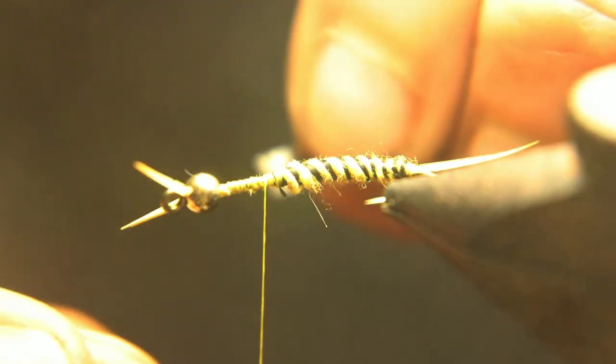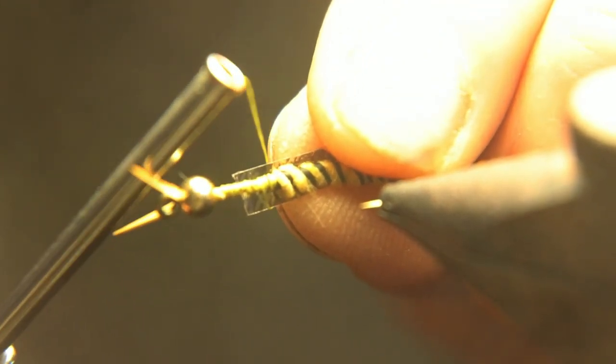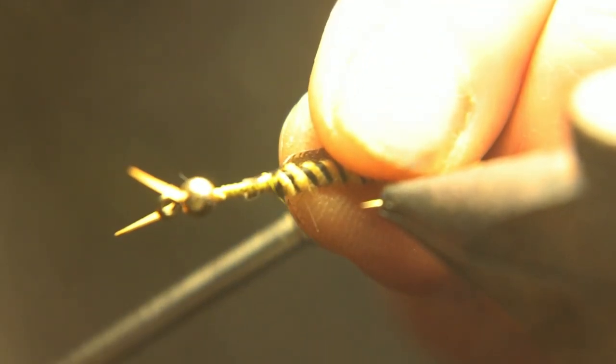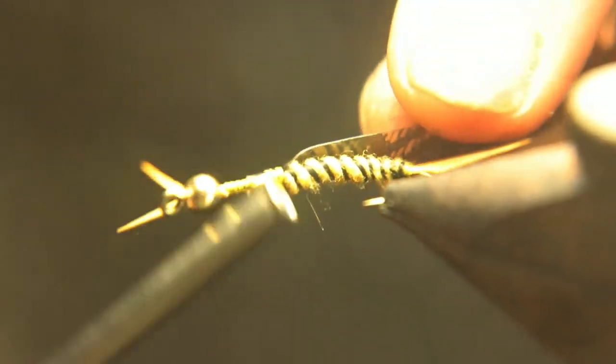I like to turn the vise towards me to tie this nymph skin. You want to make sure it's directly on top of the fly, so I like to turn it toward me so I can make sure I get it directly on top.